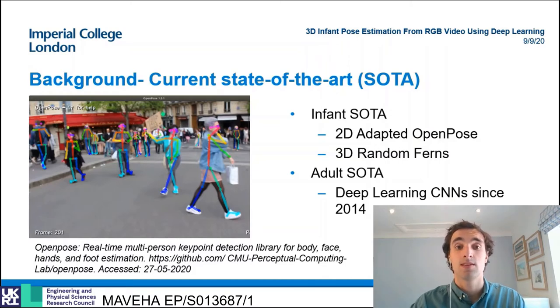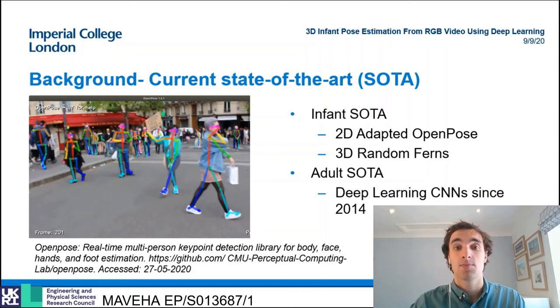This is in contrast to the adult domain in which deep learning convolutional neural networks have represented the state of the art since the introduction of DeepPose by Toshev et al. in 2014.